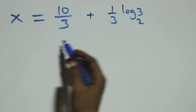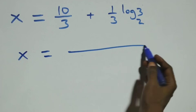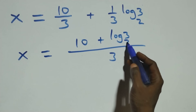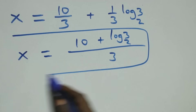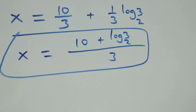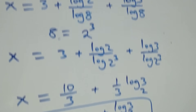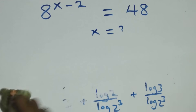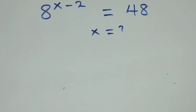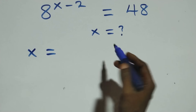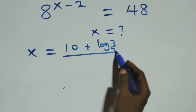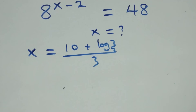Next step here, we bring this together as one fraction. We have x equals, with denominator 3: 10 plus log 3 base 2, all over 3. That is the value of x: x equals 10 plus log 3 base 2, all over 3.